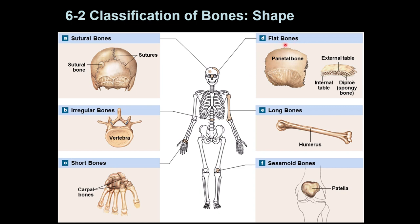The fourth type is flat bones. Flat bones have two parallel surfaces and are flat. You can see them in the skull, the sternum or breast bone, the ribs, the scapula or shoulder blade at the back. You will discuss these names in more detail in chapter seven, so don't worry about the spelling right now.